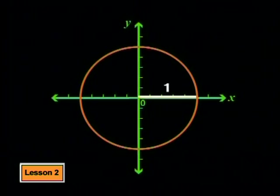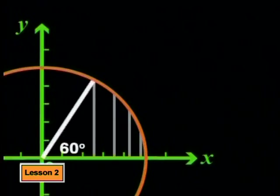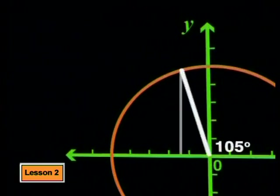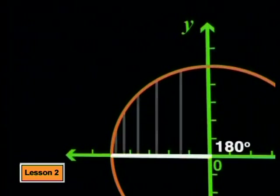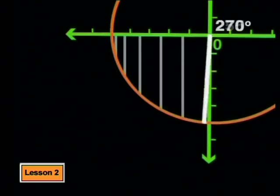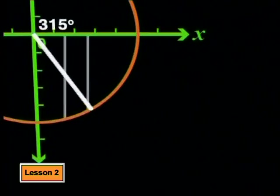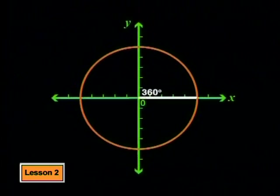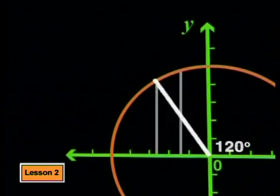Watch what happens to the value of sine theta, shown by the height of y, as theta increases from 0 to 360 degrees. For theta changing from 0 to 90 degrees, sine theta increases from 0 to 1. Then it decreases from 1 down to 0 for x between 90 degrees and 180 degrees. It continues to decrease from 0 to negative 1 as we move from 180 degrees to 270 degrees. Then it increases again from negative 1 to 0 as theta changes from 270 degrees to 360 degrees. This pattern helps us decide how to join the points we have plotted on the graph of the sine function.